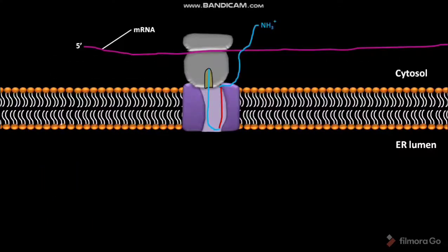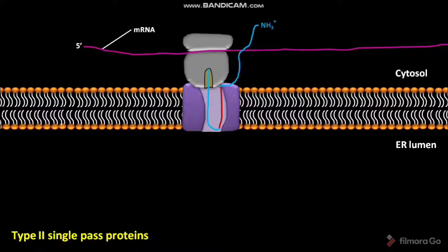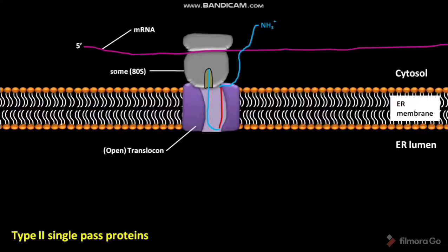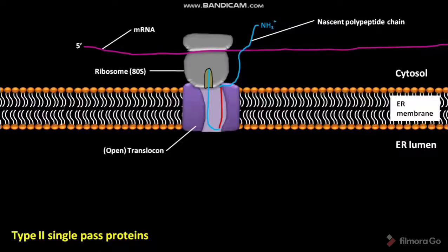Let us discuss the positioning of type II single-pass proteins. The endoplasmic reticulum membrane, or ER membrane, has a translocon in an open state. The ribosome and nascent polypeptide chain then associate with the open translocon.